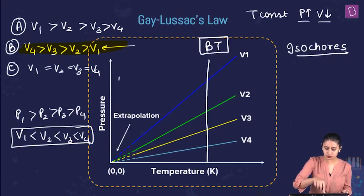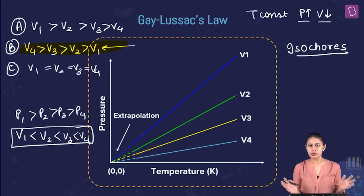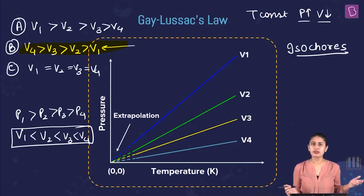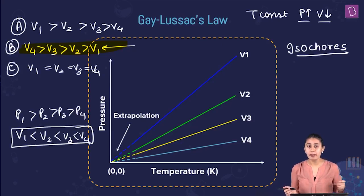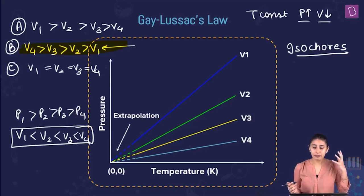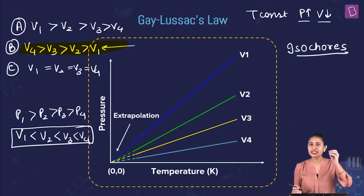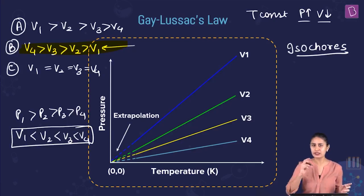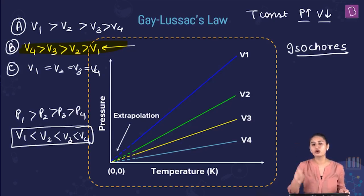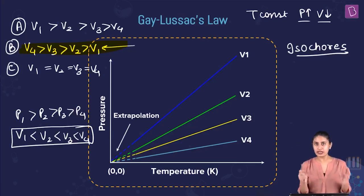Most of these gas laws do not start from the origin for simple reasons: when we say temperature 0 Kelvin, that's unattainable; volume 0 is unrealistic; and pressure 0 is also very difficult to attain since complete vacuum creation is very difficult. So general conditions are always taken, and on extrapolation the graph will meet the origin but not otherwise. Good practice is to show graphs not starting from the origin.